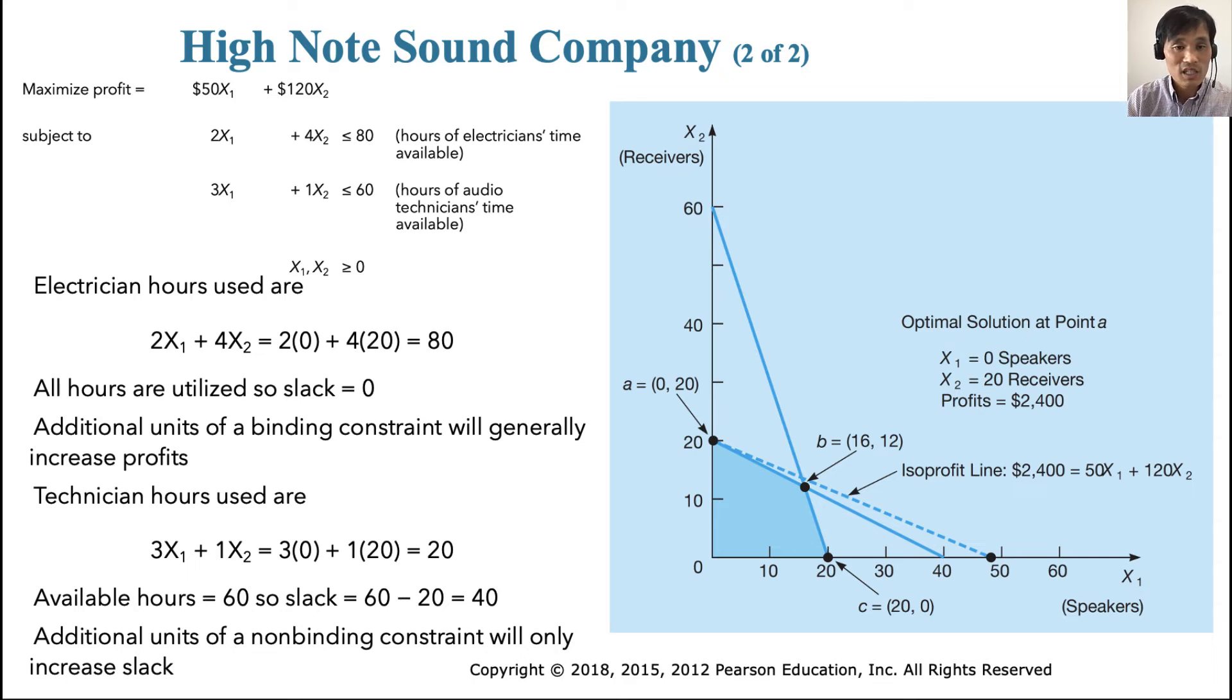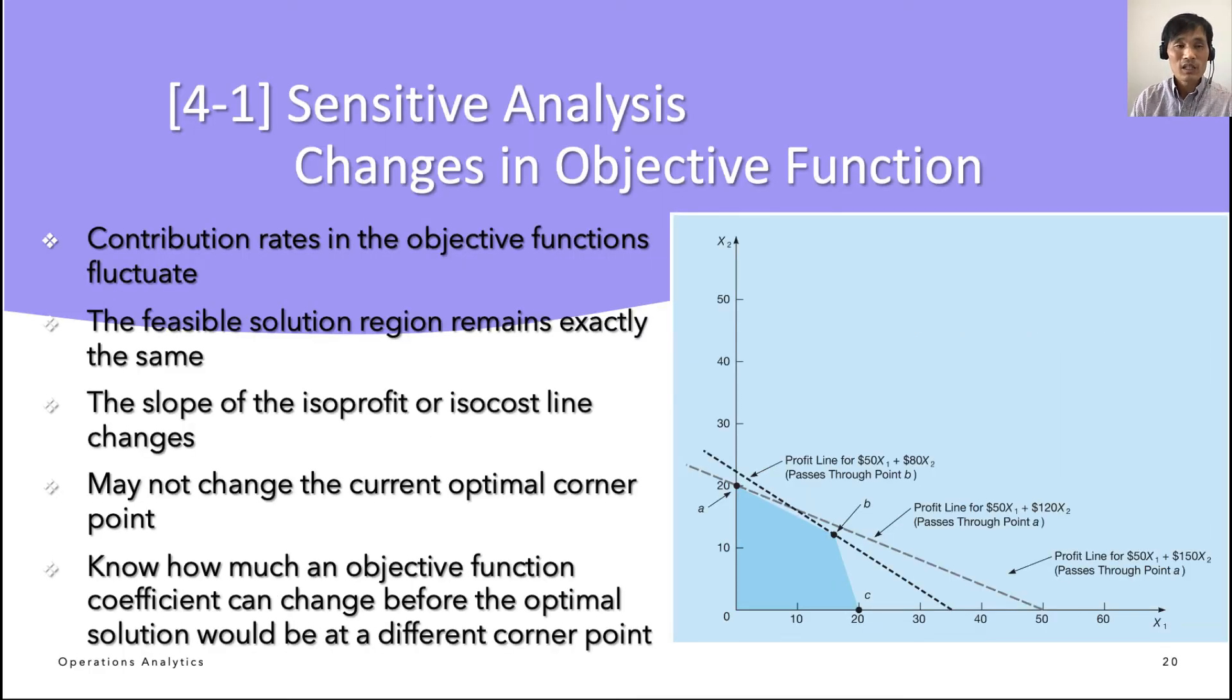Now let's consider three changes in sensitivity analysis. The first one is changes in objective function. There are three cases to consider: changes in objective function, changes in technological coefficients, and changes in the resources. First, let us consider changes in objective function.